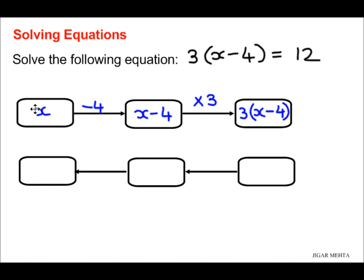Now I'm going to go backward and solve the equation starting with 12, because 3 times x minus 4 as per the question equals 12.